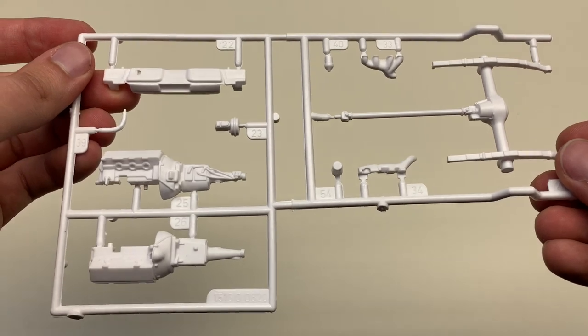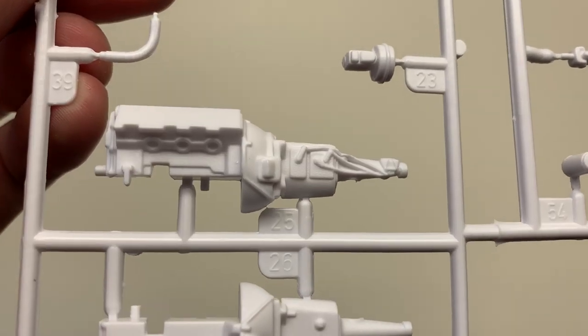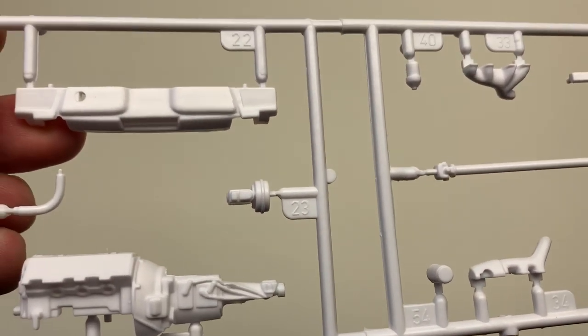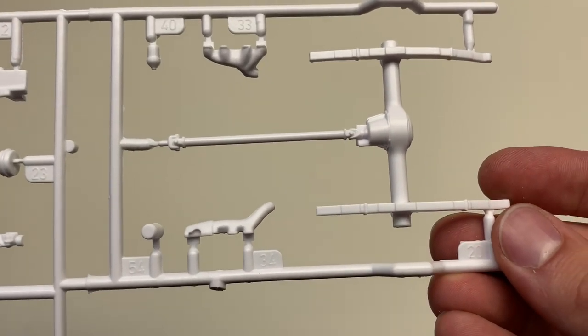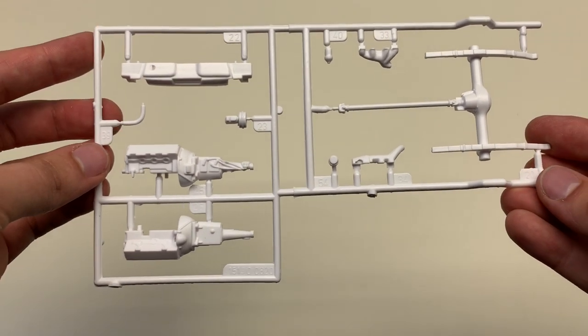On the various other sprues, there are multiple components for some of the engine transmission stuff, some more engine bay parts, and some various other parts for the suspension and exhaust pieces as well.